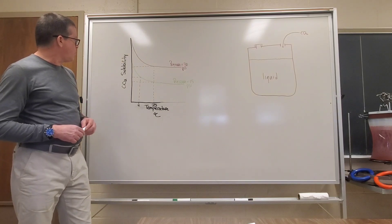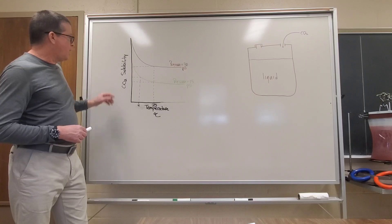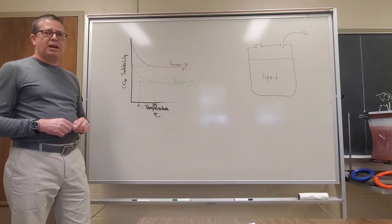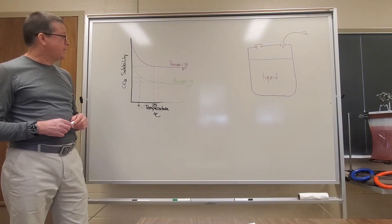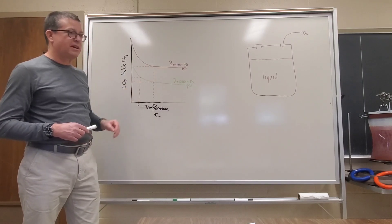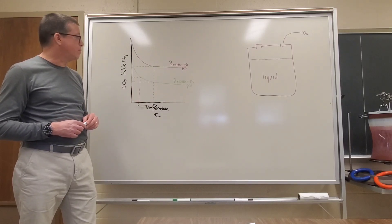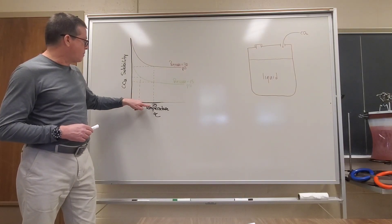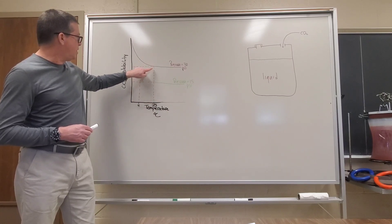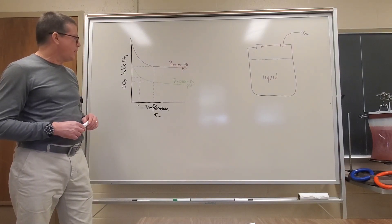What we're plotting here is the solubility of carbon dioxide in our kombucha as a function of temperature and pressure on these two curves. If we see an increase in pressure from 15 psi up to 30 psi, that's a doubling of the pressure of the CO2 gas above the kombucha. At any given temperature - for example, at 25 degrees Celsius - we see essentially a doubling of the solubility of the carbon dioxide in the beverage.